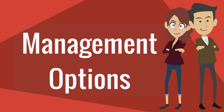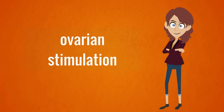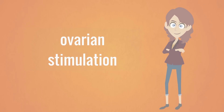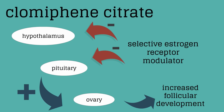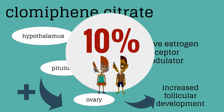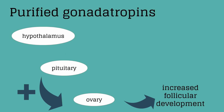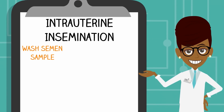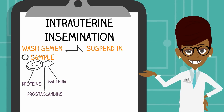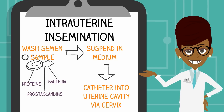Let's now talk about management options. We have to address male factors, female factors, and unexplained or other conditions. Ovarian stimulation agents will stimulate and effectively improve ovulation. Clomiphene citrate is a selective estrogen receptor modulator that competes for estrogen receptors at the hypothalamus and pituitary, leading to increased gonadotropin release, which stimulates increased follicular development. There is an approximate 10% risk of multiple gestations with clomiphene citrate. Similarly, controlled ovarian hyperstimulation with purified human gonadotropins stimulates the ovary to increase follicular development, with a 25% incidence of multiple gestation. With intrauterine insemination, ejaculated semen is washed to remove prostaglandins, bacteria, and proteins, suspended in a small amount of medium, and a catheter is advanced through the cervix into the uterine cavity.